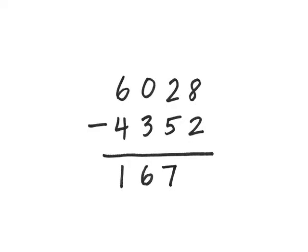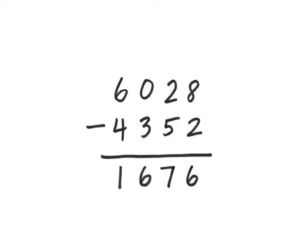Finally, I look at the last column, the ones place. 8 minus 2 is 6. I write the 6 and I'm done. The answer is 1,676.